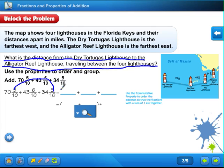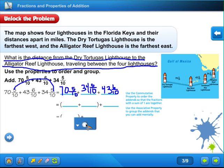So let's write those two next to each other. So 70 and 5 tenths plus 34 and 5 tenths plus, you can't forget about this one, 43 and 6 tenths. So let's go on to the next step.